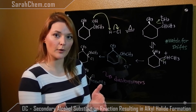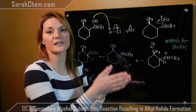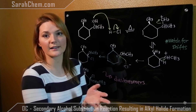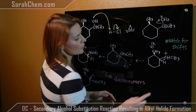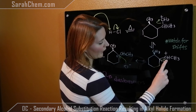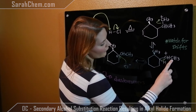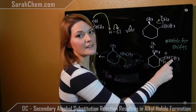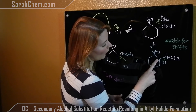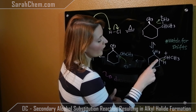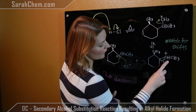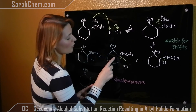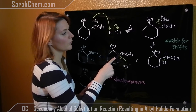Remember, you will shift your carbocation if it results in a more stable one. A tertiary carbocation is more stable than a secondary, which is more stable than a primary. So here we have a secondary carbocation. Shifting in one direction would cause a primary, which isn't more stable, so we wouldn't see that shift. However, the adjacent carbon is tertiary, so if I do a 1,2-hydride shift — meaning the hydrogen on that carbon shifts to this carbon — I form a tertiary carbocation.